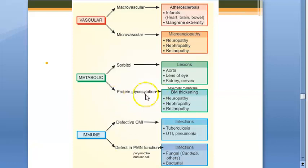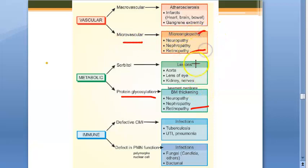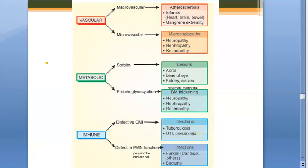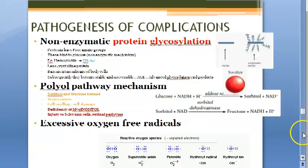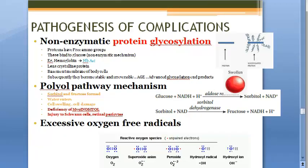In pathology, we have also seen that because of protein glycosylation - protein plus glucose - there can again be retinopathy. So because of microangiopathy there is retinopathy, because of sorbitol there is some problem with the lens of the eye, and because of protein glycosylation there is retinopathy. As a complication of diabetes, retinopathy can happen and cataract can happen - that is lens change.